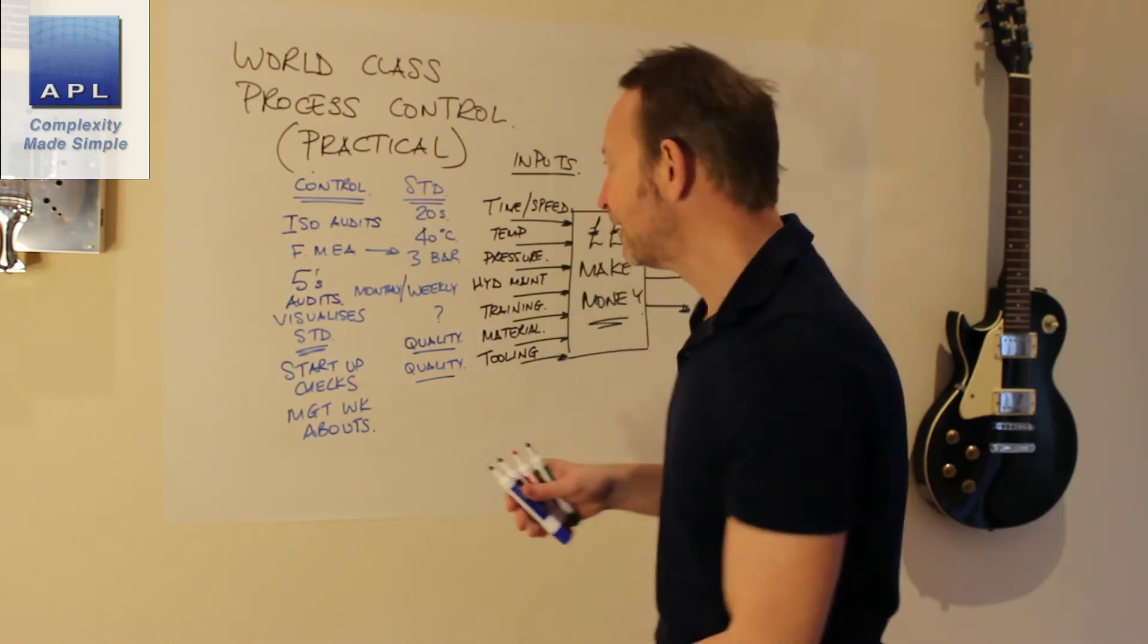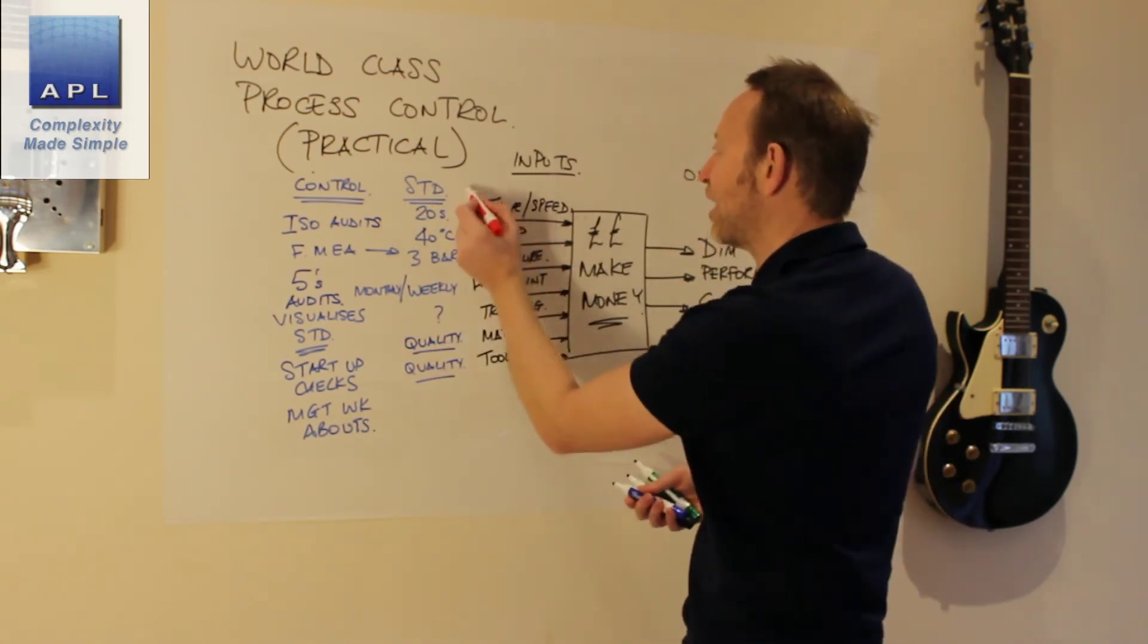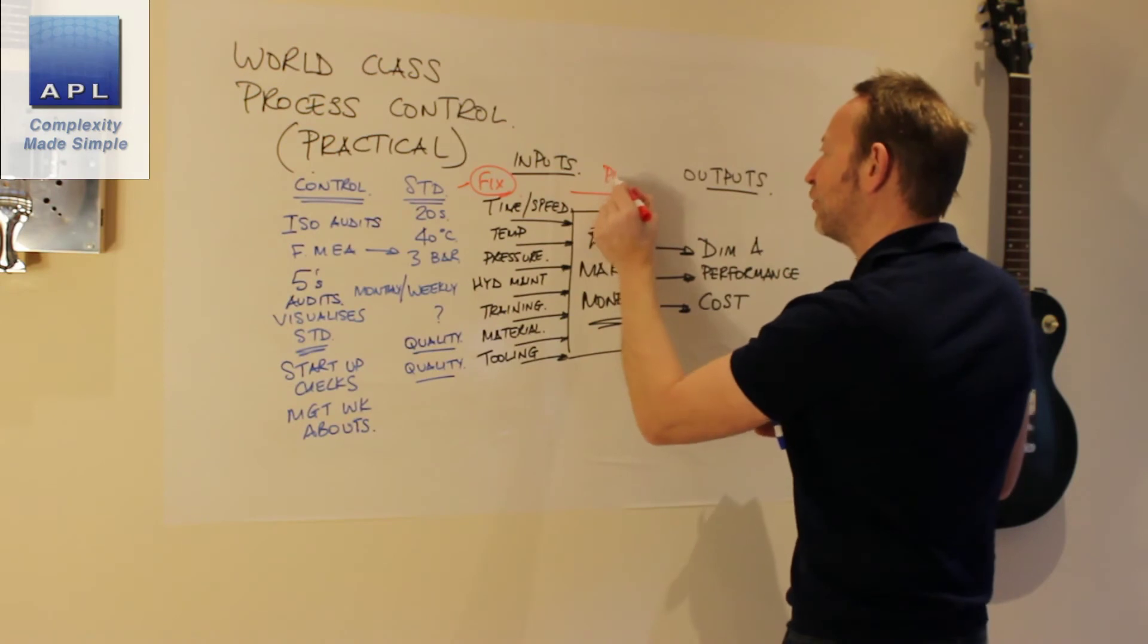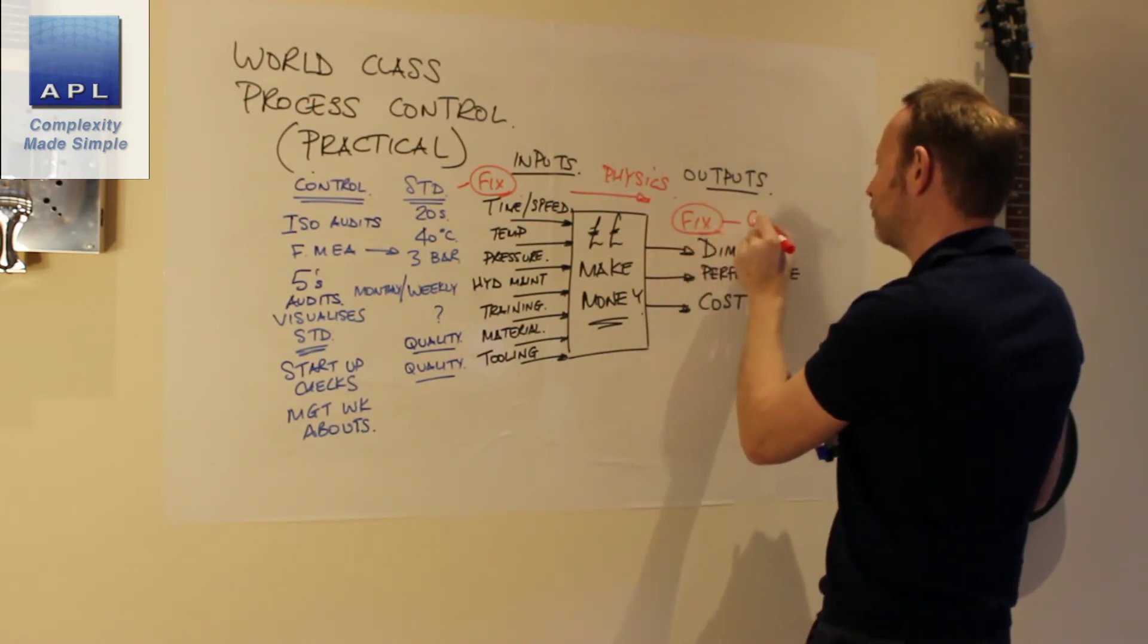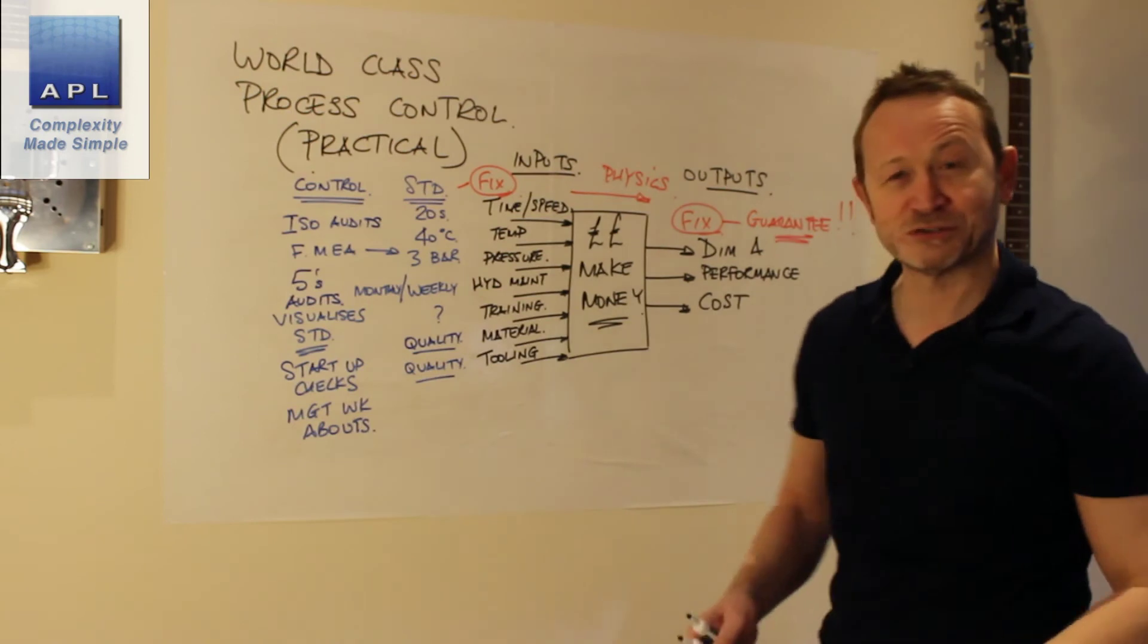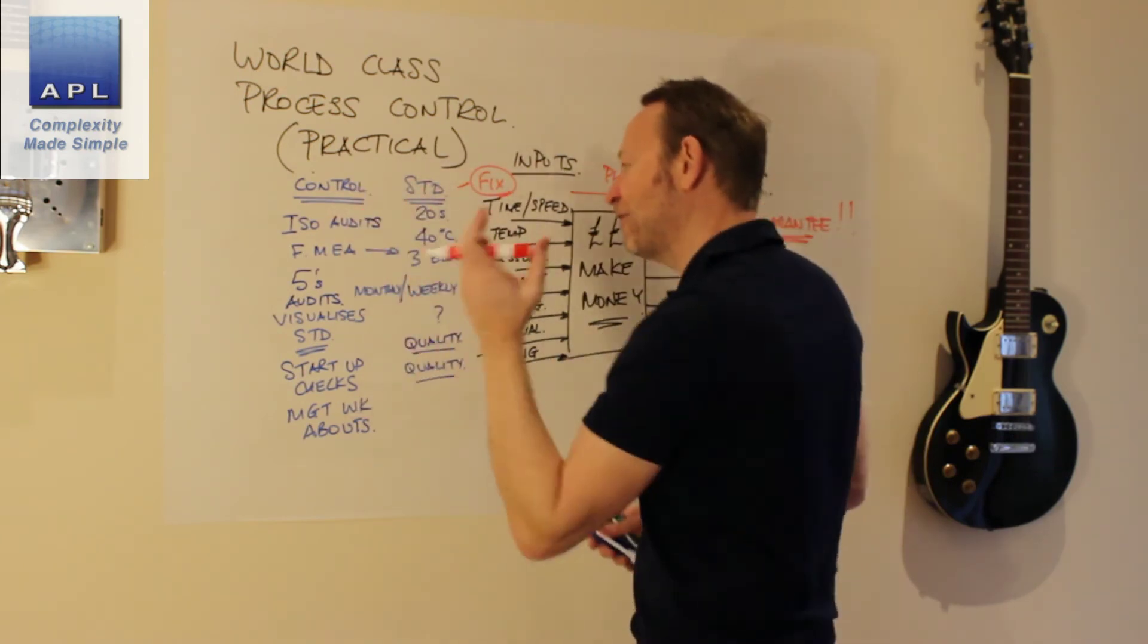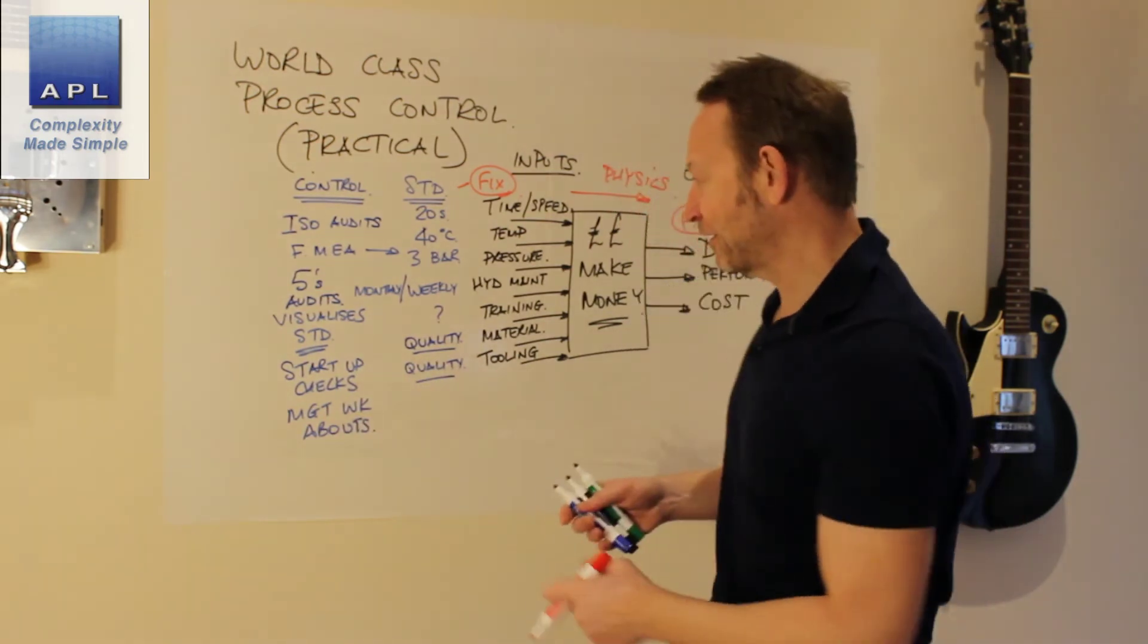They make them use the rule. So you have inputs. You decide where they should all be. Effectively, what is the standard doing? It simply fixes the input. And if it fixes the input, physics have to work here. The laws of physics play into your process. And if you fix the inputs, you fix, and another word for fix is you guarantee the output. Fixed input. That is process control. Fixed input that guarantees the outputs using all the policing techniques. ISO audits, FMEA, 5S audits, start-up checks, management walkabouts.